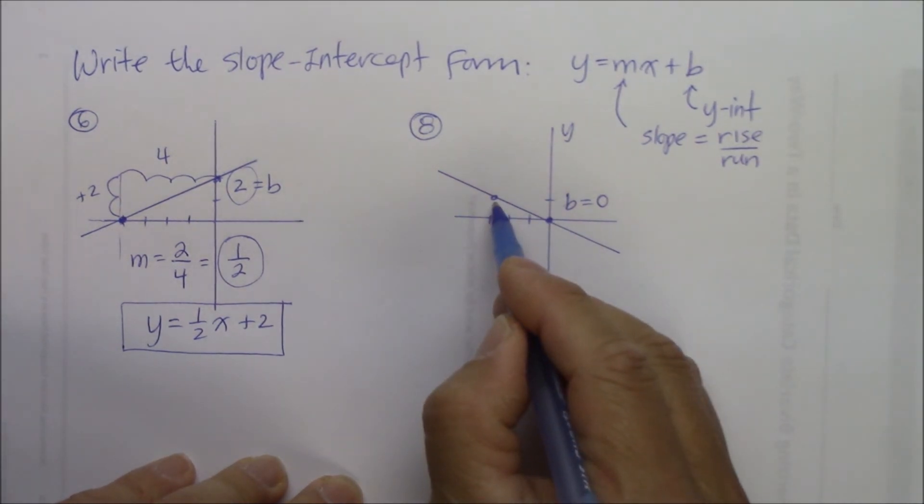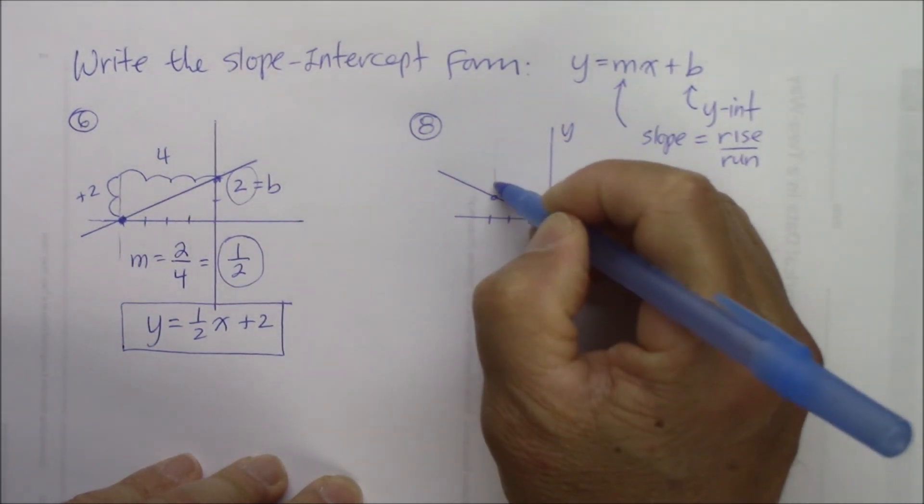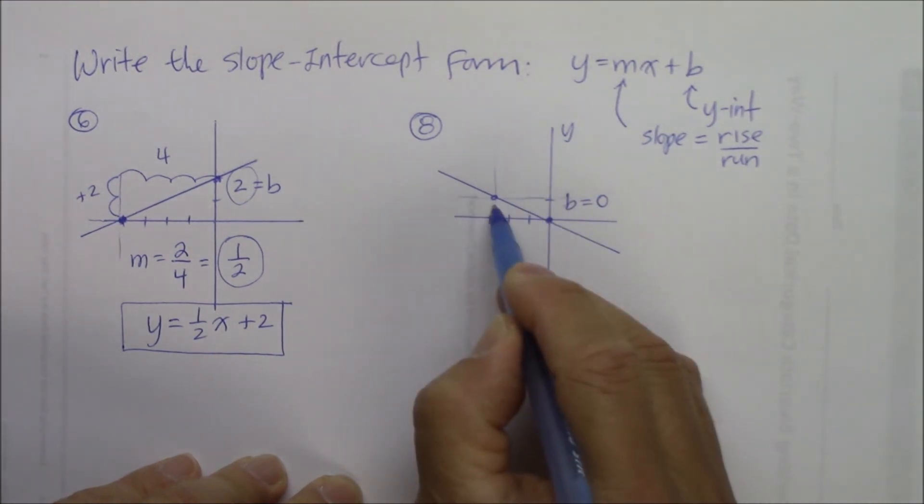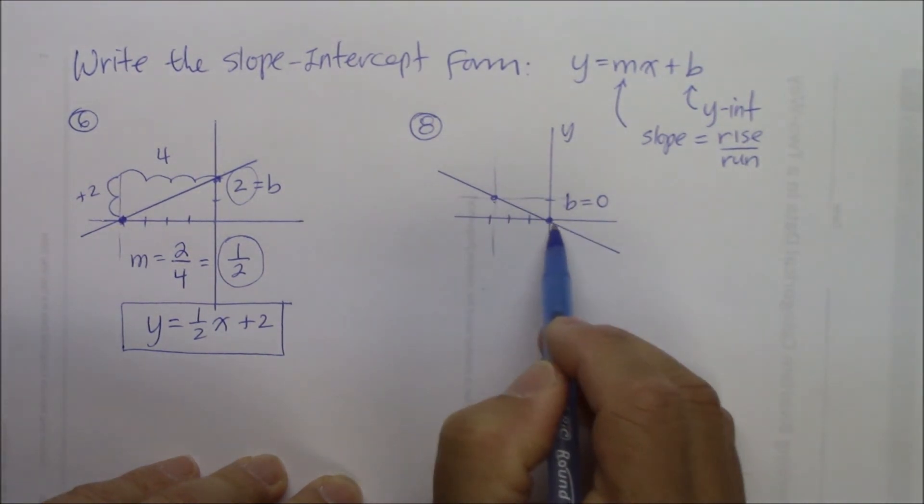And what appears to be a line that's going through the coordinate of negative three and one, from here, to go there, what is the rise over run? What is the rate of change?